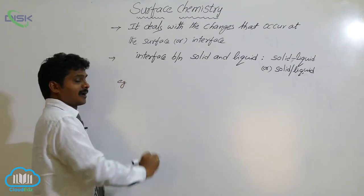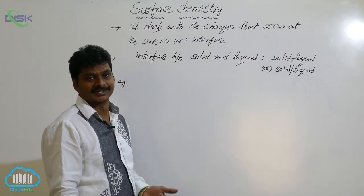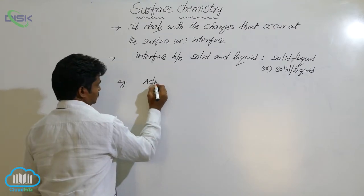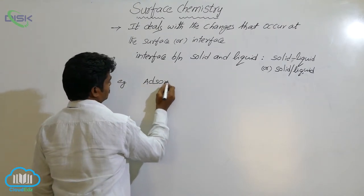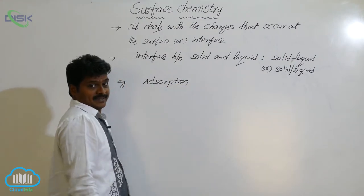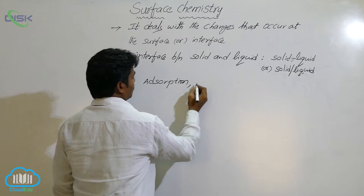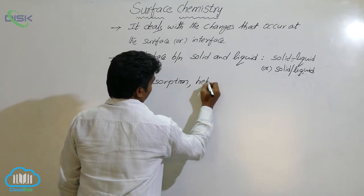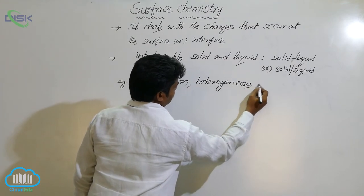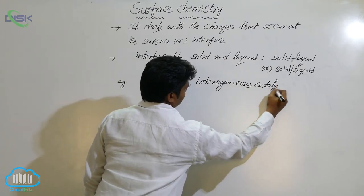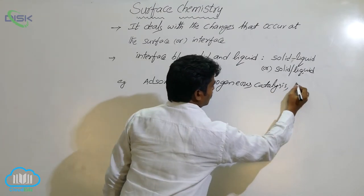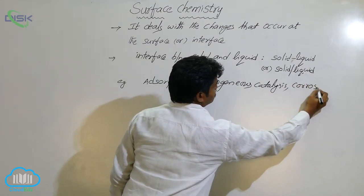Let us see some examples of phenomena which occur at the interface or surface. First, adsorption — it occurs at the surface. Second, heterogeneous catalysis. Third, corrosion — corrosion also occurs at the surface.